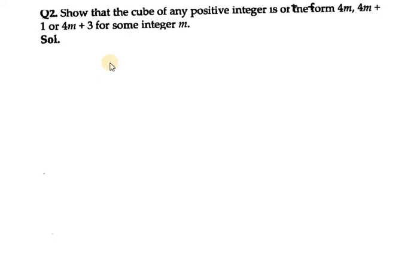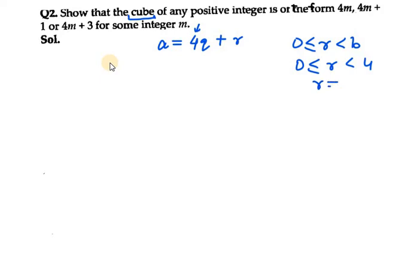Moving on to question number 2 of exercise 1.3 — it says: show that the cube of any positive integer is of the form 4m, 4m plus 1, or 4m plus 3. In this question, b is 4, so r lies between 0 and 4, meaning r can take 4 values: 0, 1, 2, and 3.